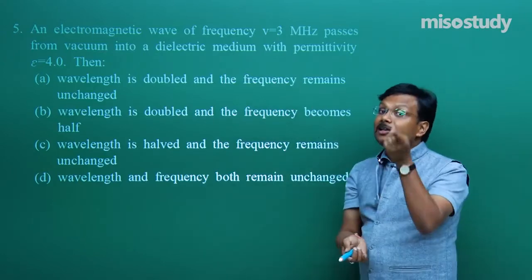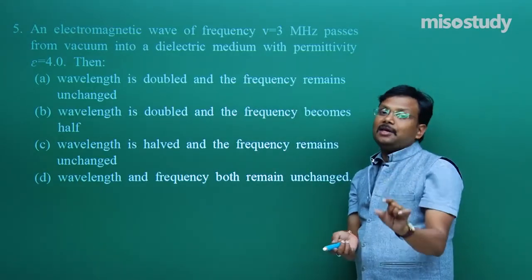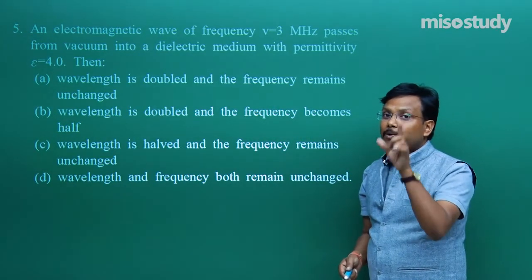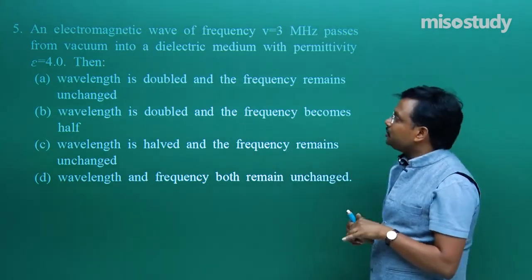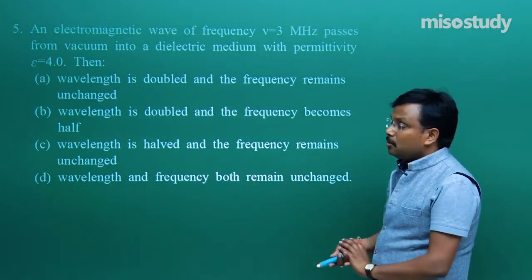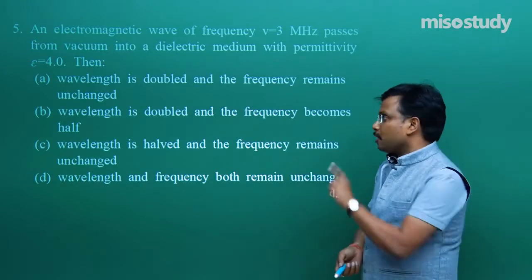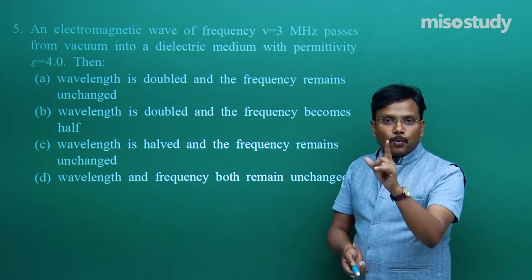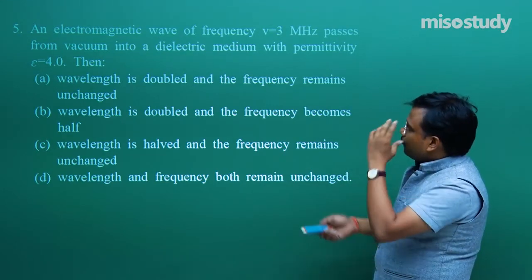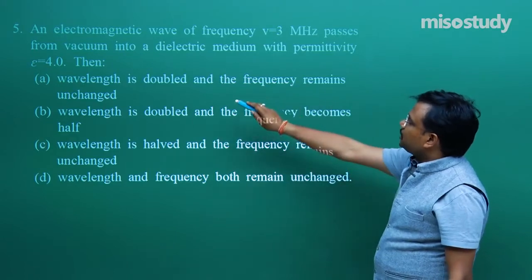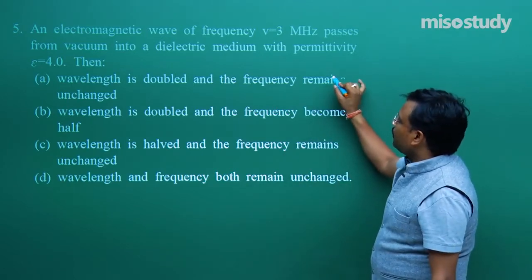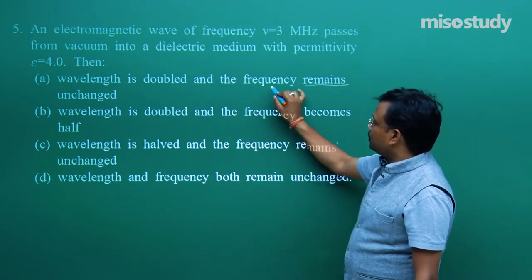If velocity is reduced, and frequency is the characteristic of the source (so frequency will not change), then λ will have to change — because velocity is changing as the wave moves into a medium. With permittivity ε = 4, which of the four options is correct? First point: frequency remains unchanged, so the first option (A) may be possible — hold on for it.